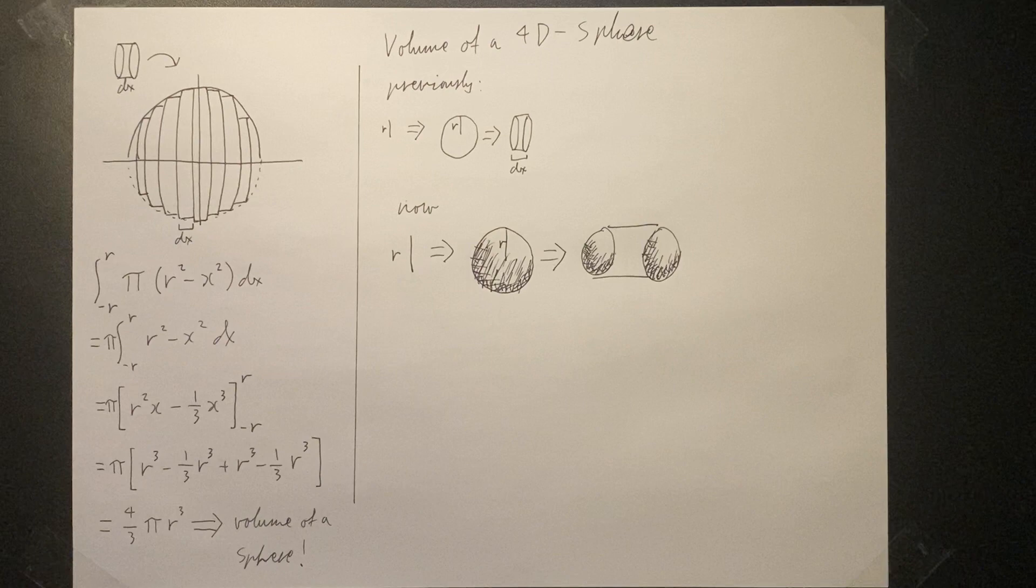We can then multiply the sphere by dx to obtain four-dimensional cylinders called spherinders. It is a four-dimensional prism with spheres instead of circles as faces. At this point, we go beyond the realm of human imagination as we only experience the world in three dimensions. Try to keep up by comparing these steps to the previous example.